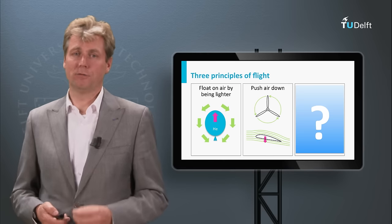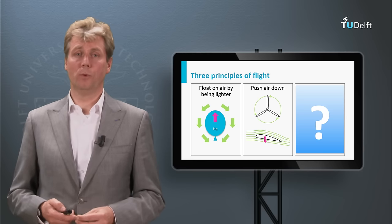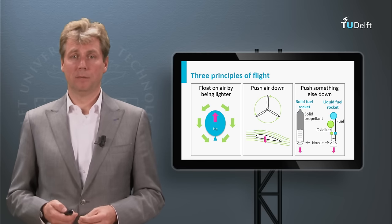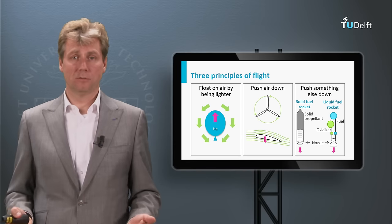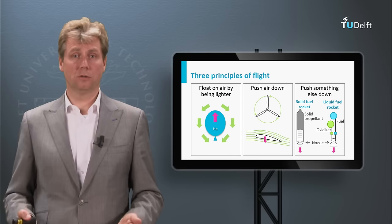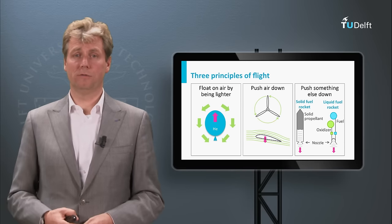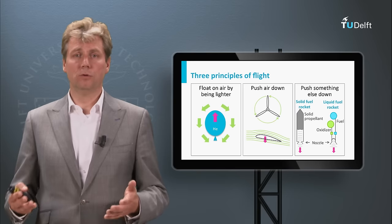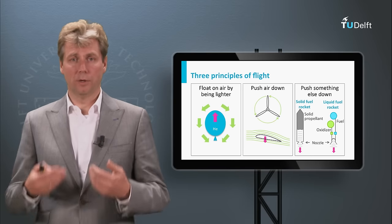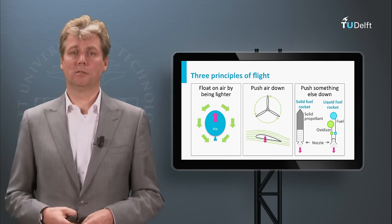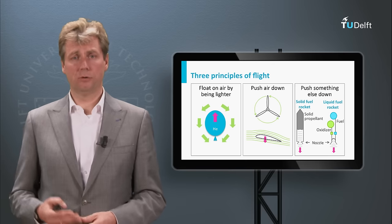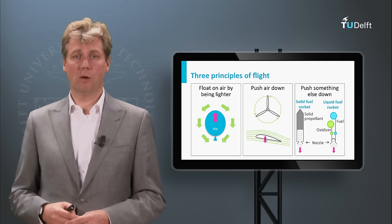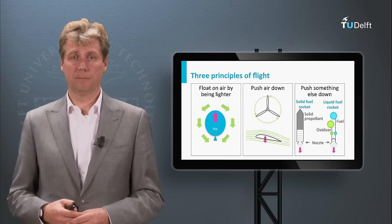And this of course also hints at the third way in which you can generate lift, which is to push anything else down. For instance, a rocket lifts off by burning the fuel and pushing this down, and this way creates as a reaction the force upwards, and this is also a way to fly.